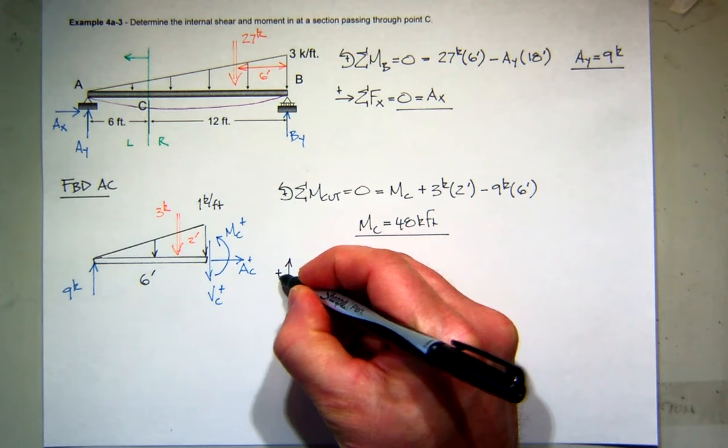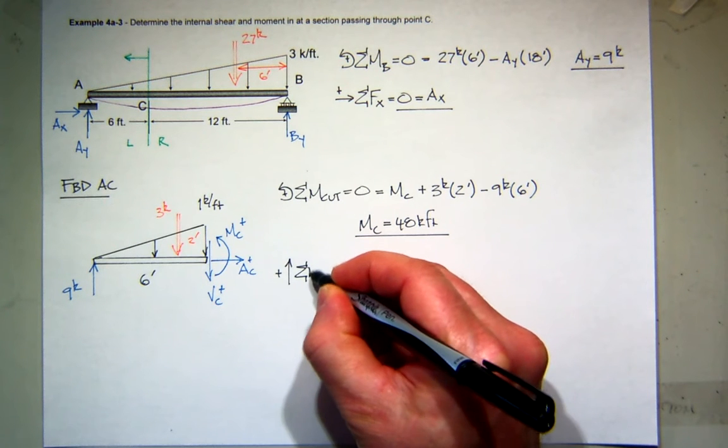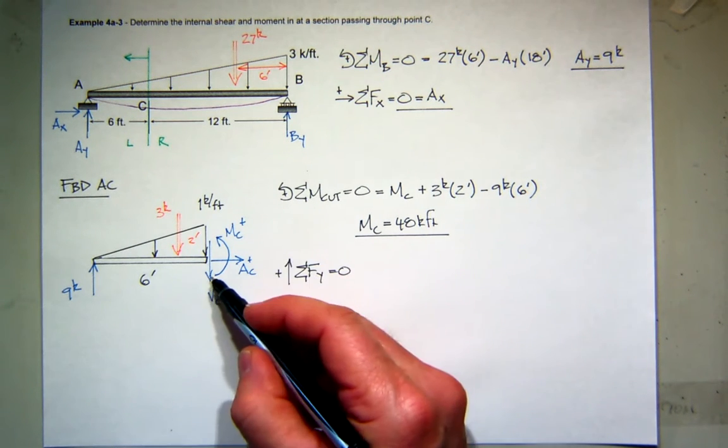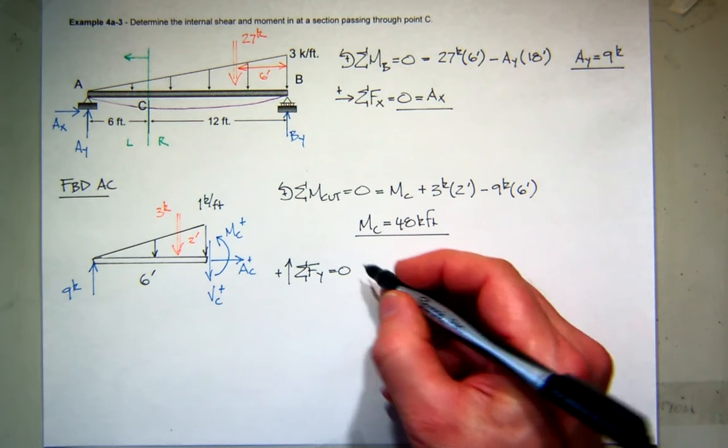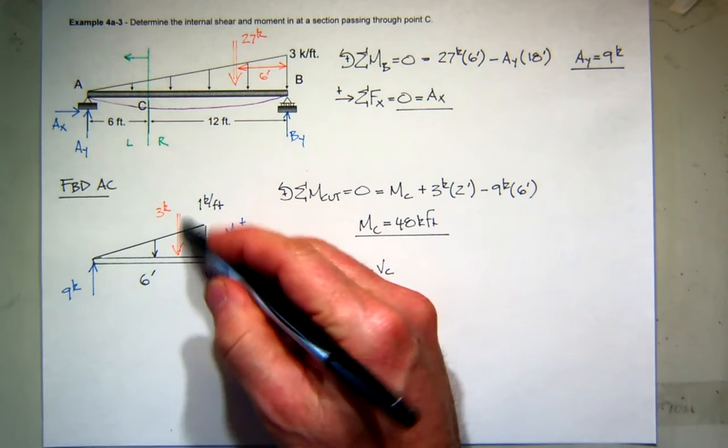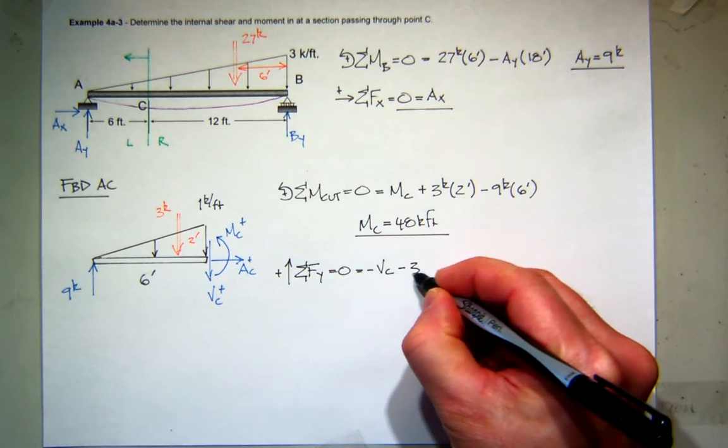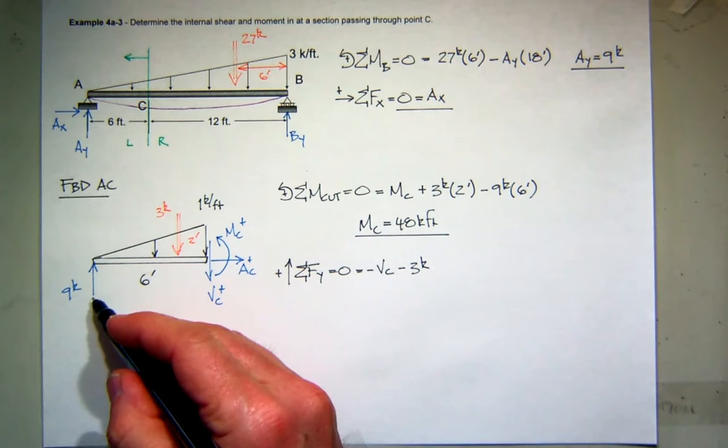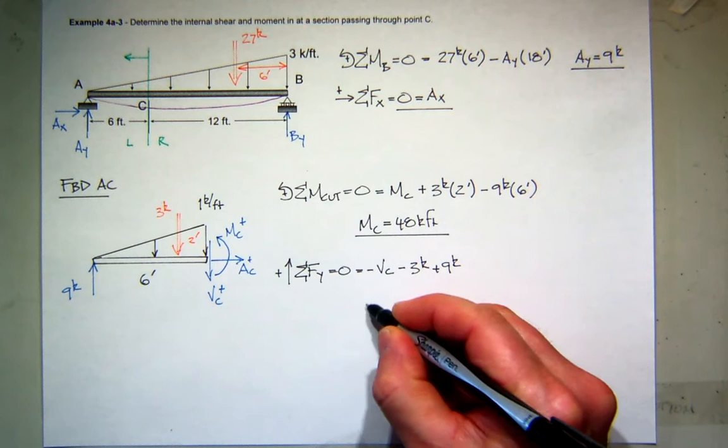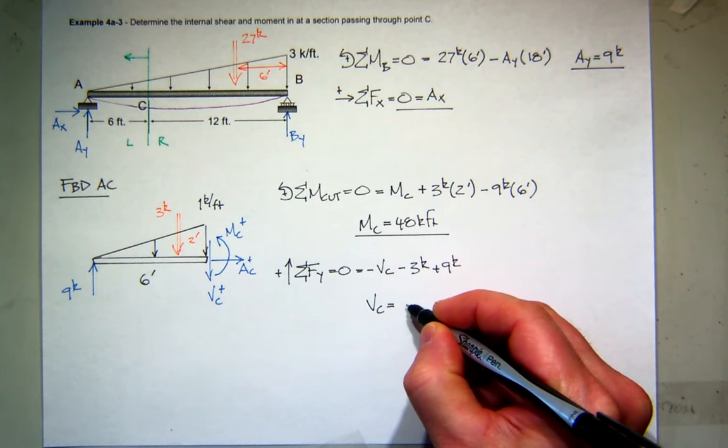Alright, let's get the shear. So let's sum forces in the y direction. I'll assume up is positive. So my shear is actually down. So I would be negative force. My load is down. That's a negative force. The reaction is up. That's a positive force. So it looks like the shear at C is 6 kips.